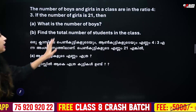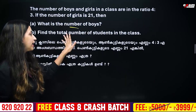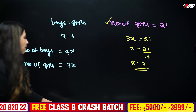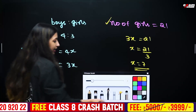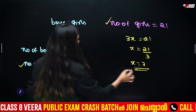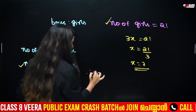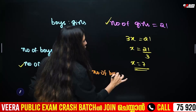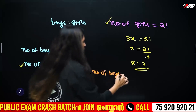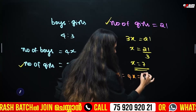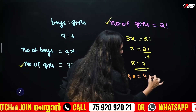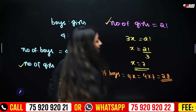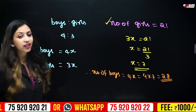We are going to find the number of boys in class. The number of boys is 4x. Now 4x equals 4 times 7, which is equal to 28. Therefore, the number of boys is equal to 28.